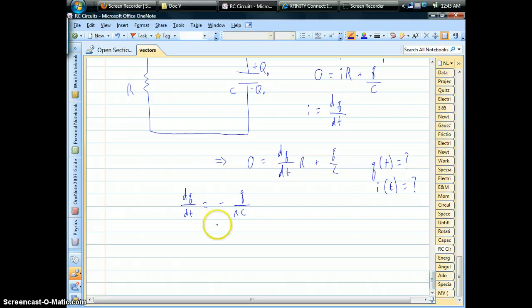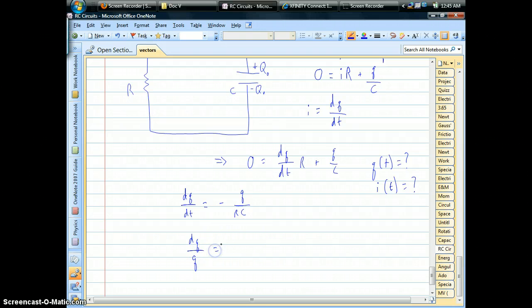And this one isn't so bad. We can separate the variables pretty quickly if we just divide by q, divide by the charge, and then we can bring that dt, that time differential, up on the right-hand side. We have a negative constant multiplied by dt over there.